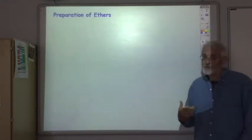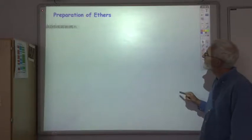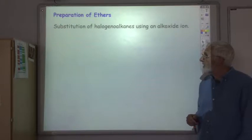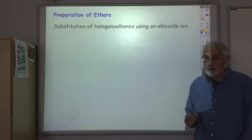So first of all, how do we make ethers? Well as we've come across already, ethers are made by the nucleophilic substitution of haloalkanes using an alkoxide ion.